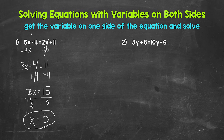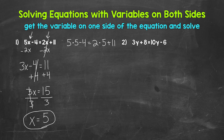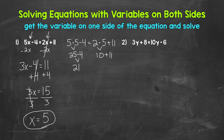Now let's check that solution by plugging it in for x. We have 5 times 5 minus 4 equals 2 times 5 plus 11. Working through the left side: 5 times 5 is 25, and 25 minus 4 gives us 21. On the right side: 2 times 5 is 10, and 10 plus 11 is 21 as well. Both sides equal 21 — we are correct. x equals 5.